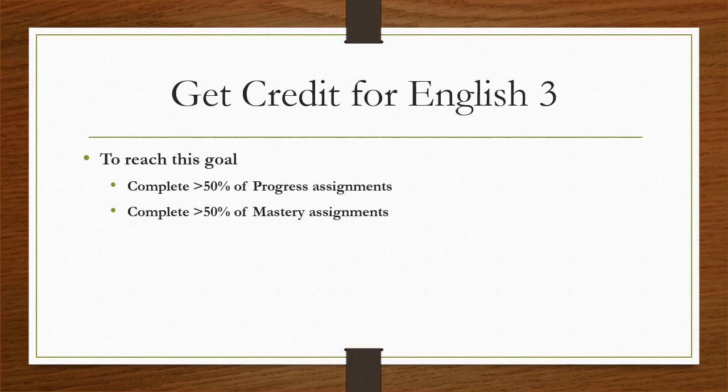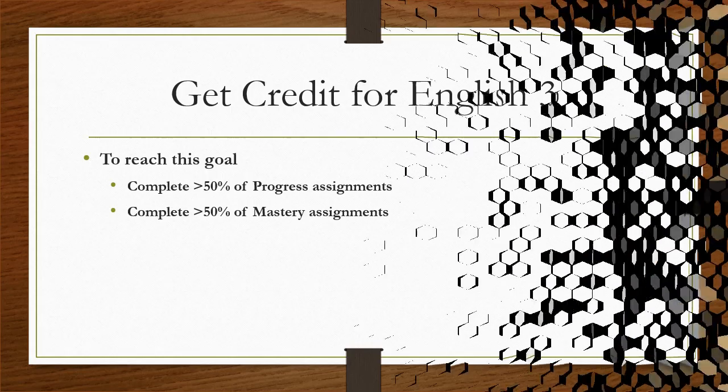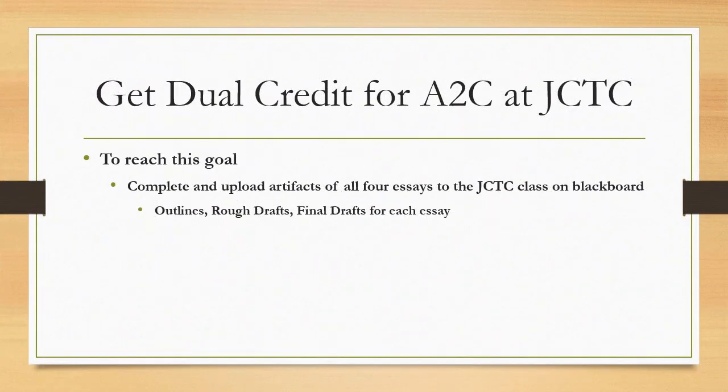I'm going to release a specific path with colors for a D, C, B, and A as we get closer to the end of the year. If your goal is to just get credit for English 3 and keep moving on track for graduation, I'll get you that specific path probably sometime at the beginning of May. To get dual credit for A2C at JCTC, you'll need to complete and upload artifacts for all four essays to the JCTC class on Blackboard. The three pieces you're uploading are the outline, the rough draft, and the final draft for each essay.